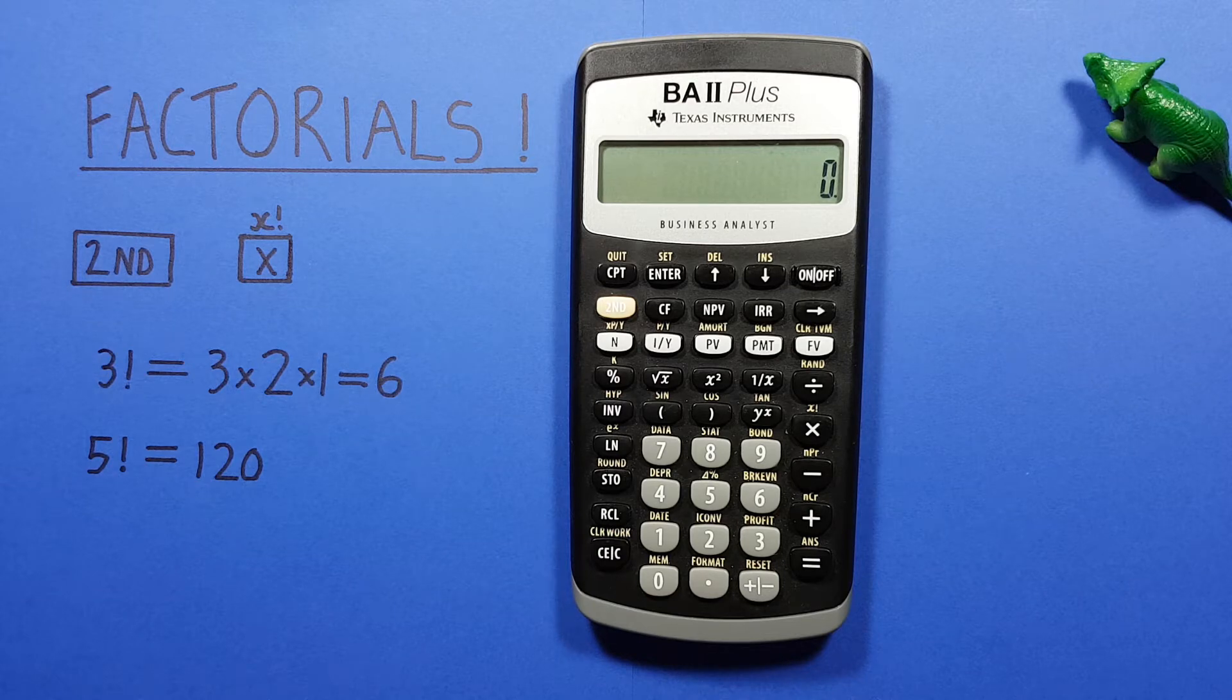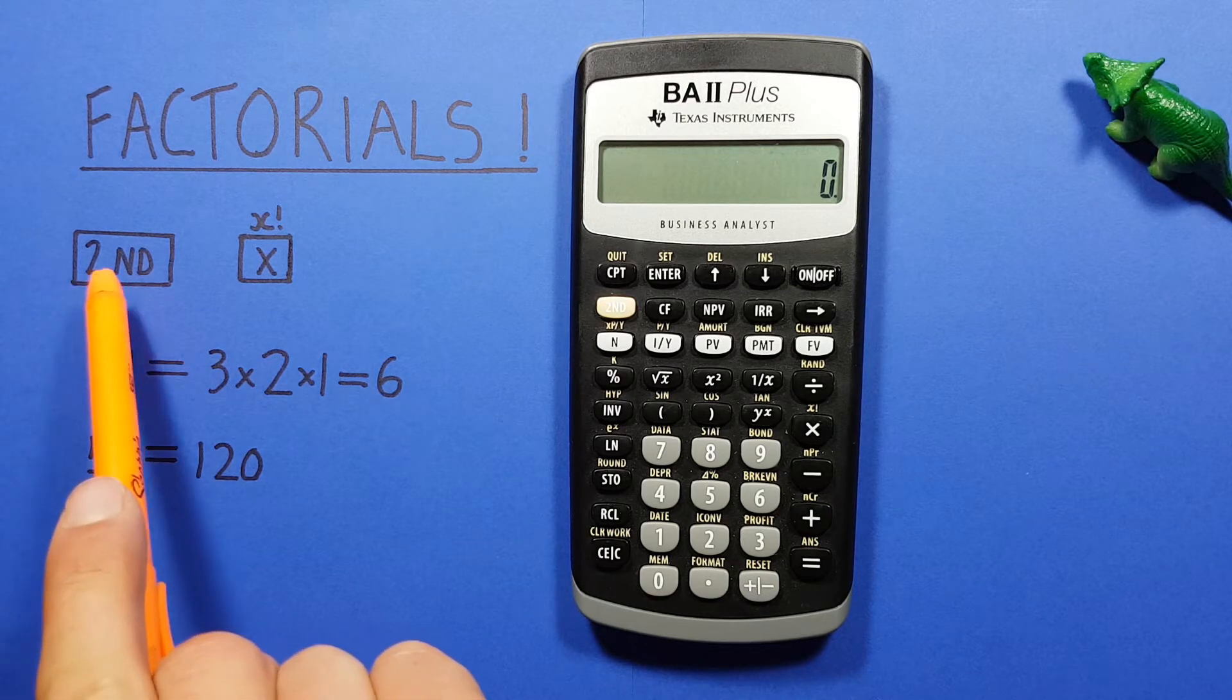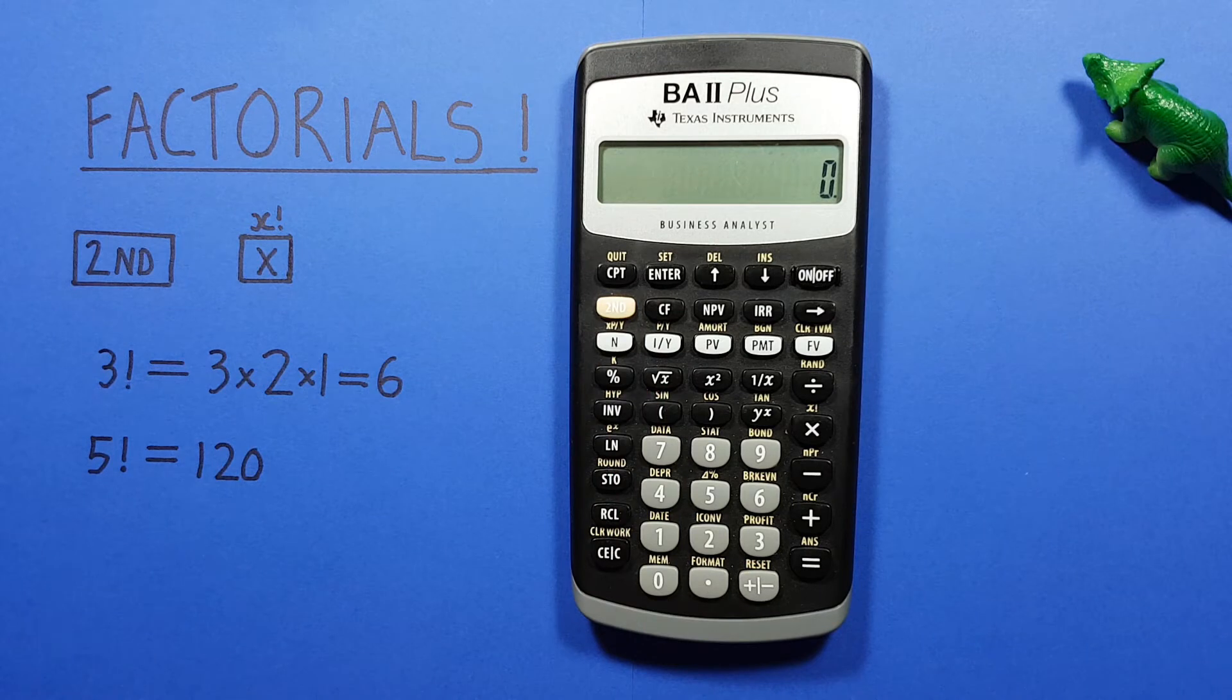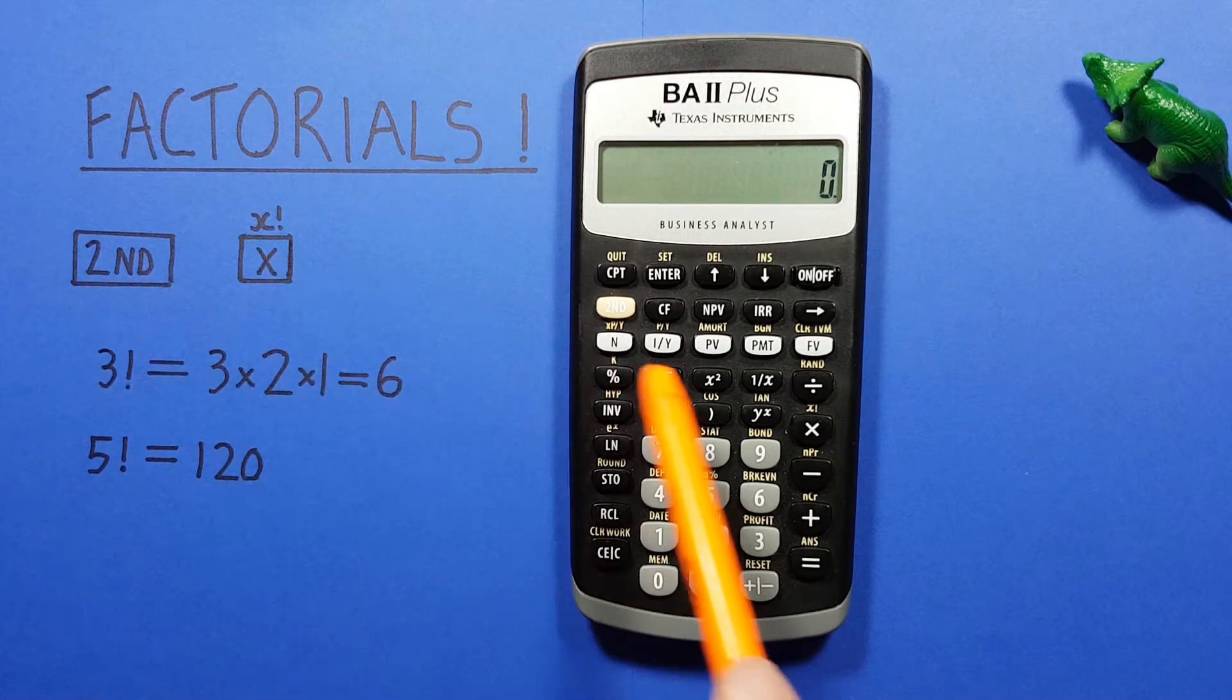To do this we'll use the second function key that looks like this located here, as well as the multiplication key with the second function of factorial that looks like this located here.